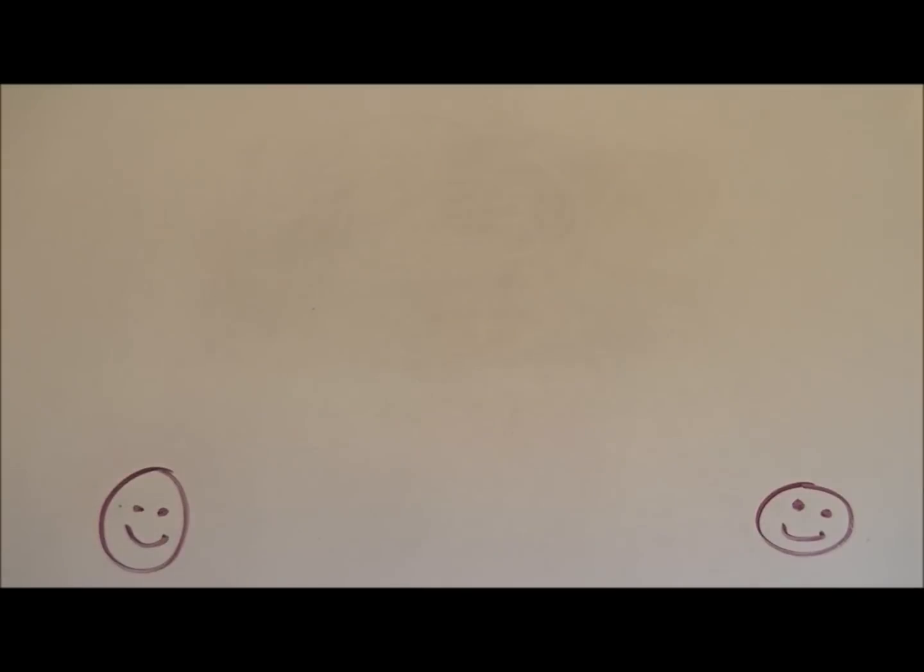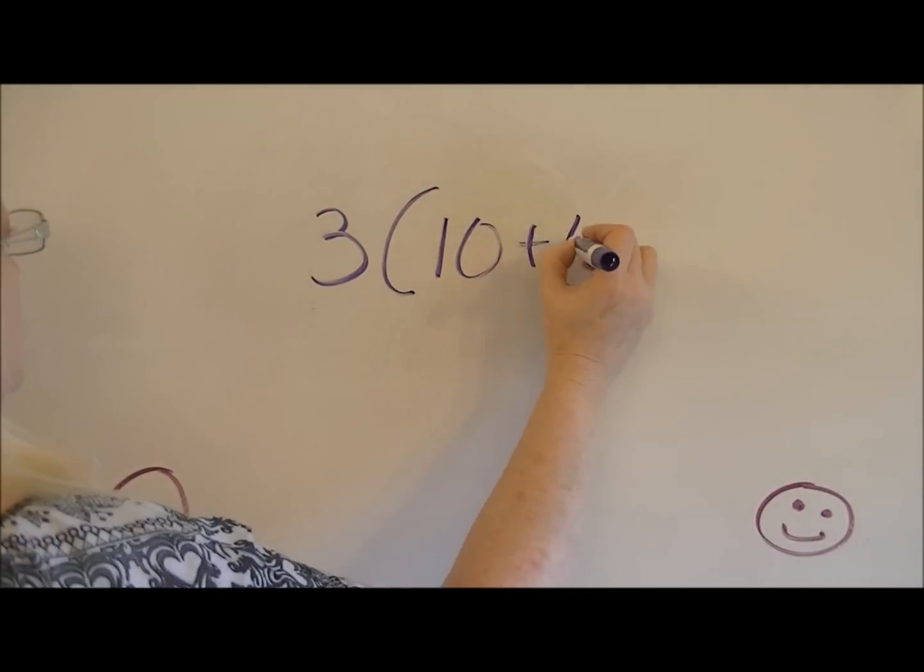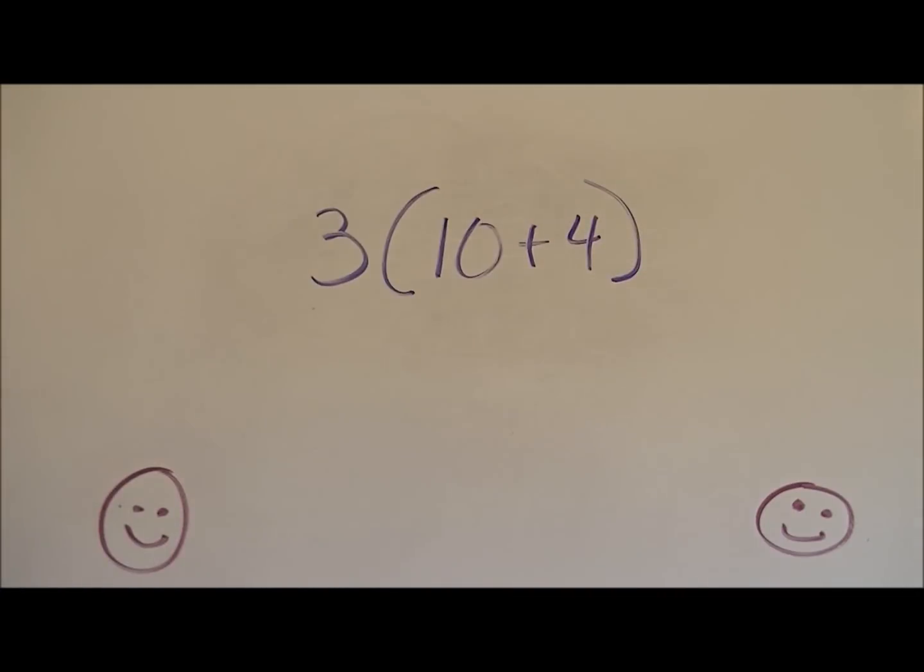All right. Now, at the beginning, I said that I would show you how to work with the distributive property with just numbers. So let's look at one problem. Let's say that we have 3 times 10 plus 4. Well, there's a couple of ways that you can solve this. You can say 3 times 10 is 30 plus 3 times 4 is 12, and that would be 42.